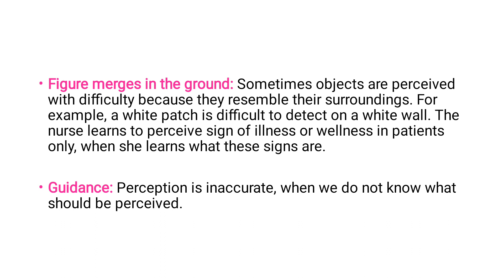Guidance — perception is inaccurate when we do not know what should be perceived. For example, if a motion picture is shown for 30 seconds and you have to identify a specific piece of music within it, amidst all the dialogues, you will be expecting and listening for that sound. You should be guided to perceive what you have to perceive — knowing what to look for helps you perceive it correctly.